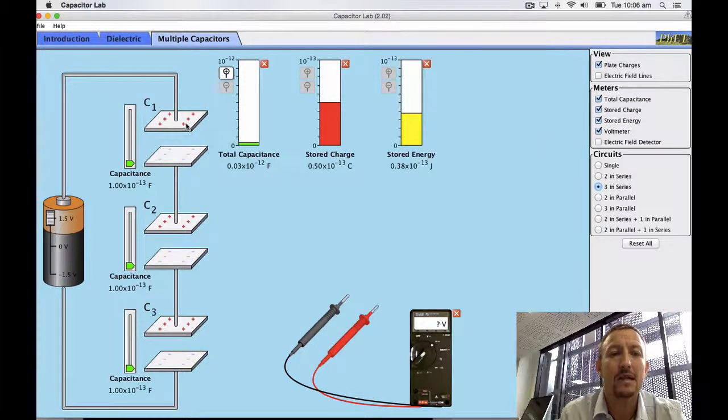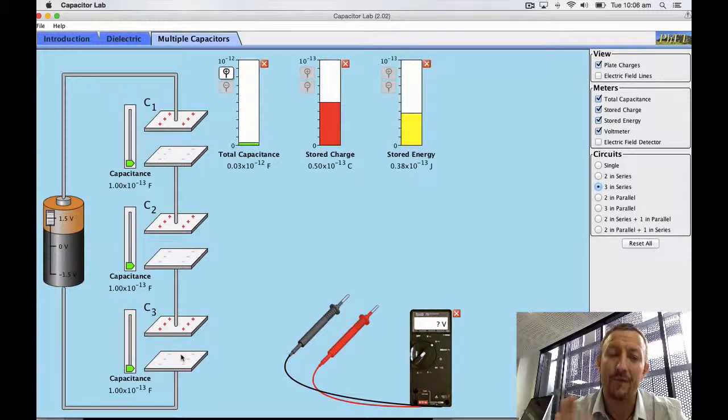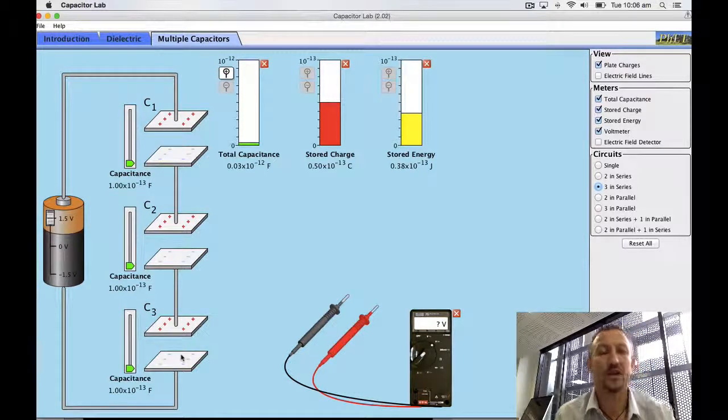So basically when we've got our capacitors in series what happens is that total capacitance decreases. The amount of voltage across each capacitor varies depending on the amount of capacitors or the size of the capacitors.